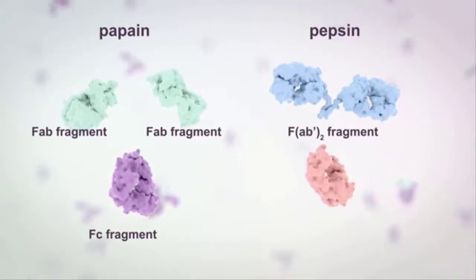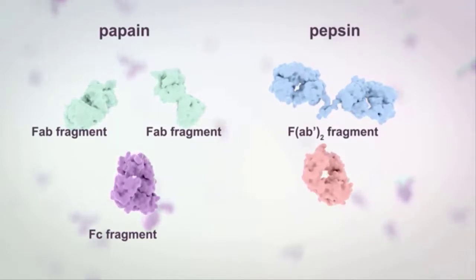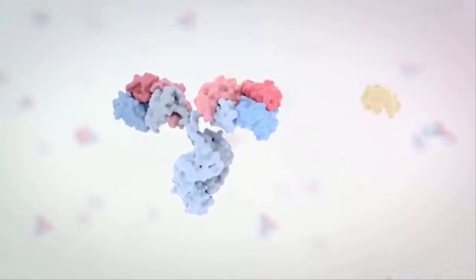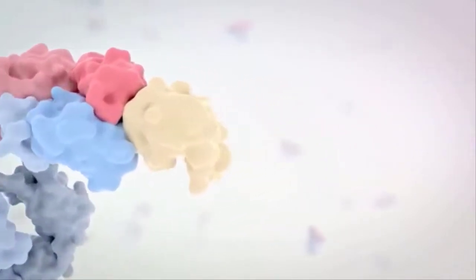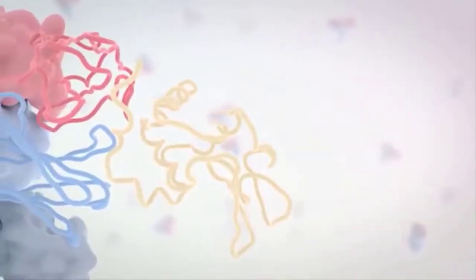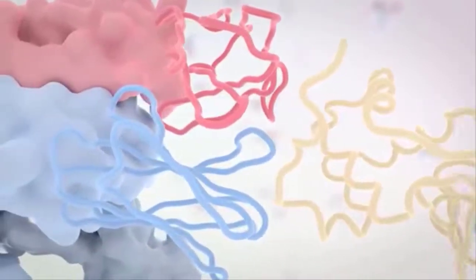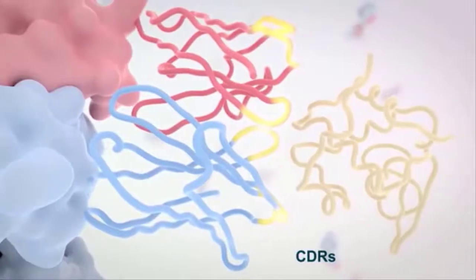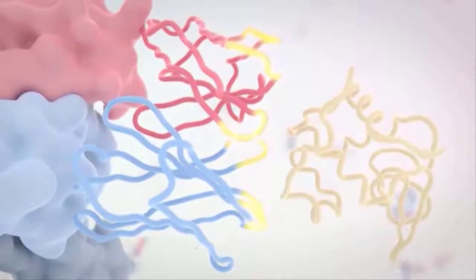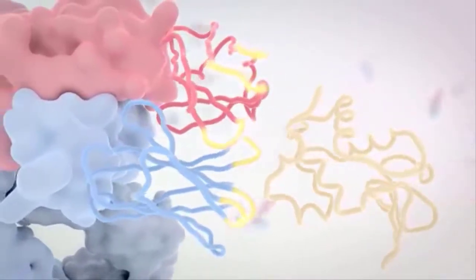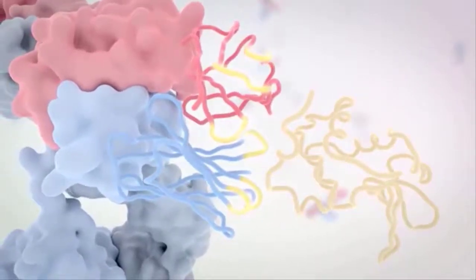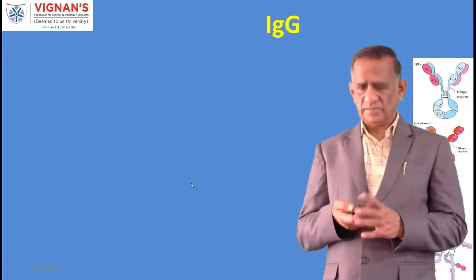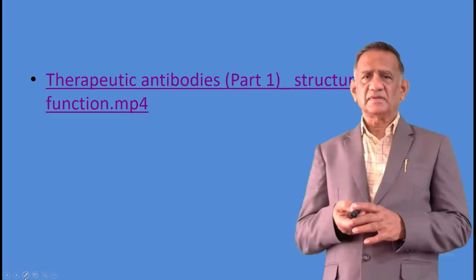Generating these separate antibody fragments in the lab has enabled the function of each region to be determined. An antibody binds its epitope through the variable regions at the tips of the heavy and light chains. There is enormous diversity in the variable regions. Each chain contains three complementarity determining regions (CDRs) at the tips of each variable domain, with framework regions leading up to those tips. Most antibody diversity is generated within the CDRs, which together form the epitope binding site.